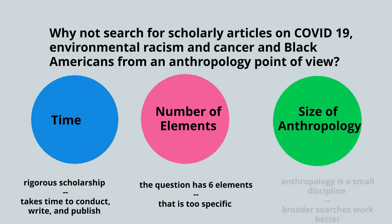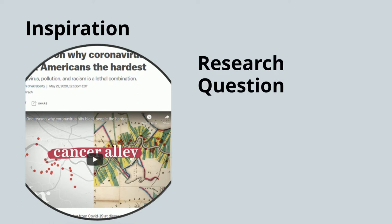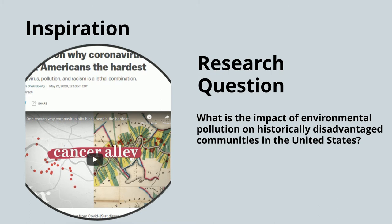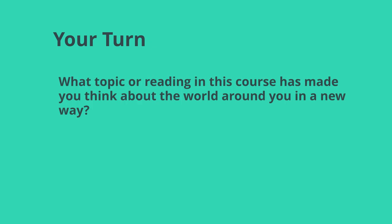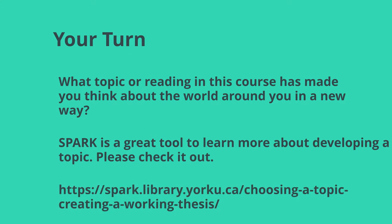However, that's too much. We can turn the inspiration from Vox into a more manageable research question: what is the impact of environmental pollution on historically disadvantaged communities in the United States? Now it's your turn — what topic or reading in this course has made you think about the world in a new way? If you're wondering how to develop questions, you can take a look at Spark, which is an online tool to help you with developing research questions.